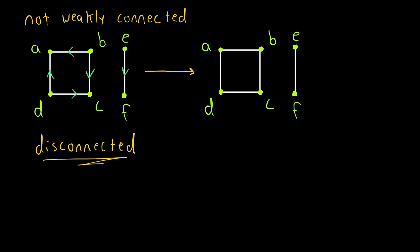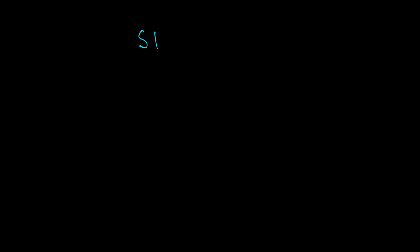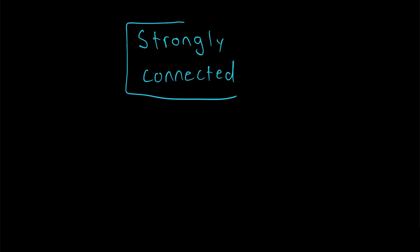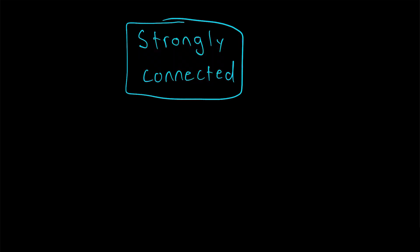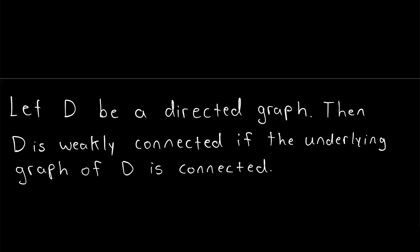Now I think all of this leads to the natural question of: is there a stronger type of connectivity we can talk about with directed graphs? And of course there is — it's called being strongly connected. After some of our earlier discussion, you might be able to guess what the definition of a strongly connected directed graph is. We'll talk more about that in the next lesson.